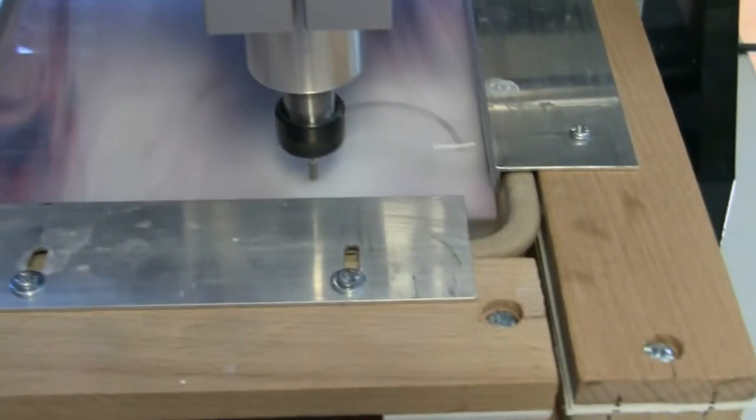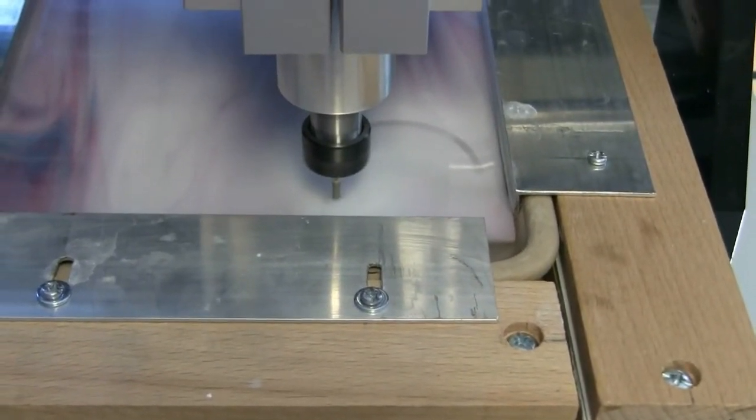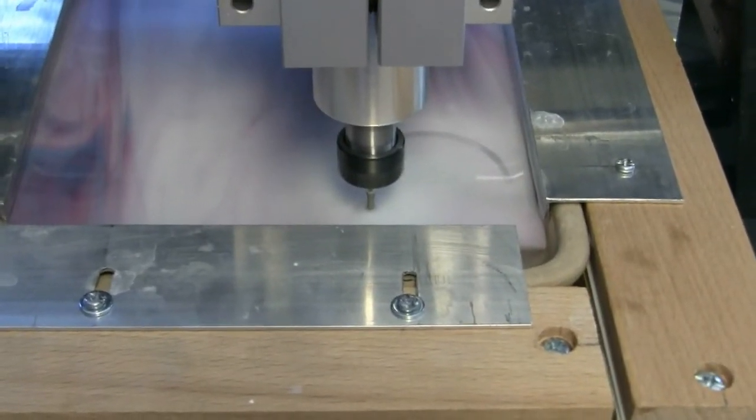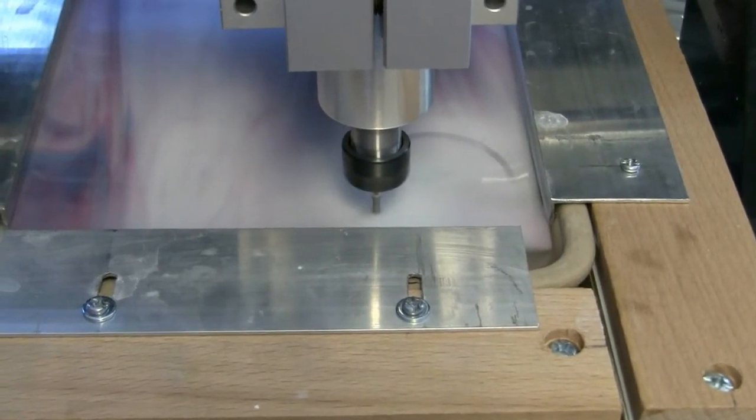Time will tell how well this burr bit holds up. I need to mill four surfaces, I've got four decals, and then I need to mill four clear top sheets, or possibly clear bottom sheets depending on where I decide to put the decal.